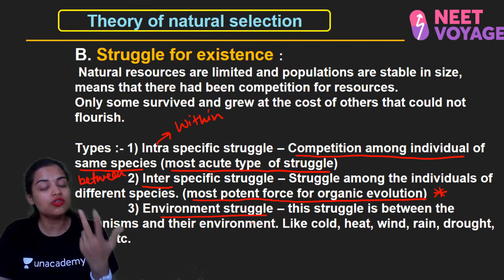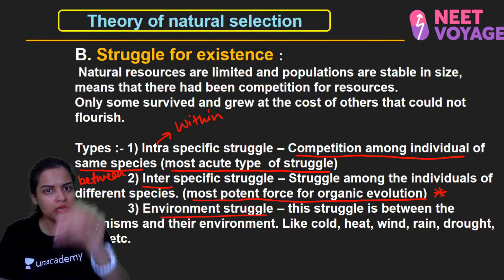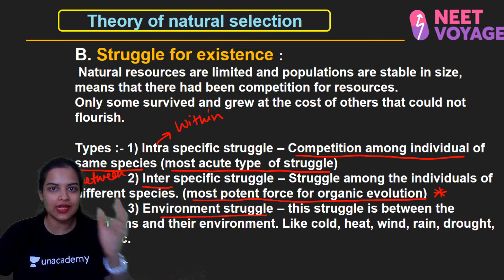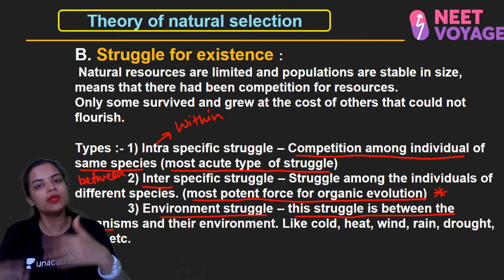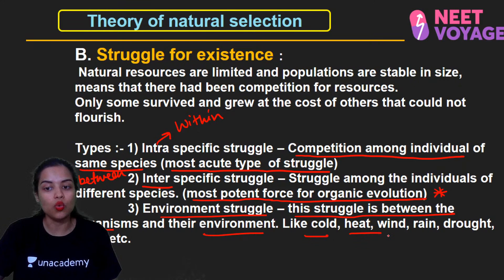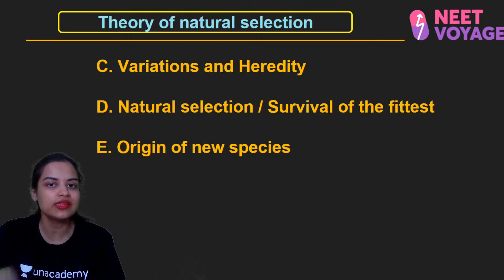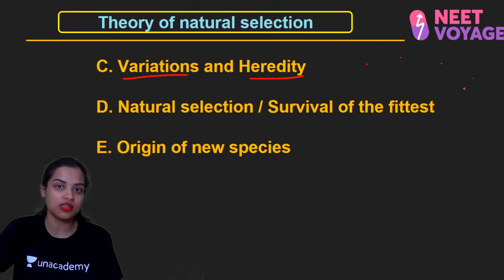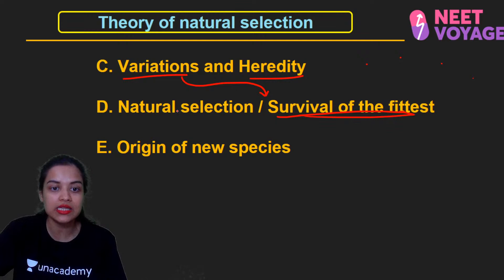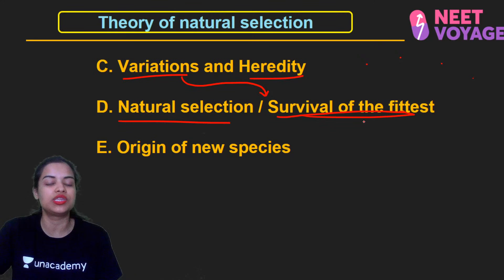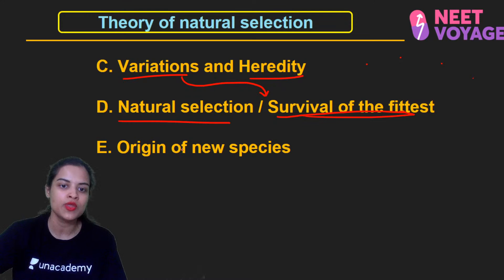The third type is environmental struggle — every species, whether human, tiger, cow, or cat, struggles against environmental conditions like cold, heat, wind, rain, drought, or flood. This is the struggle between organisms and their environment. From all these varieties under struggle, the fittest will survive — survival of the fittest leads to natural selection. The surviving organism's heredity is passed on to the next progeny, resulting in the origin of a new species.